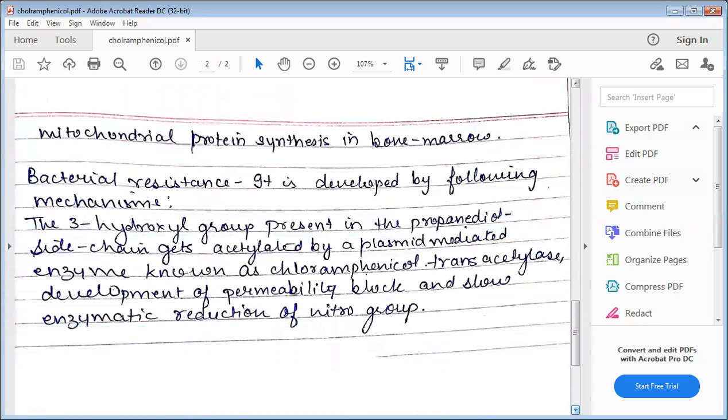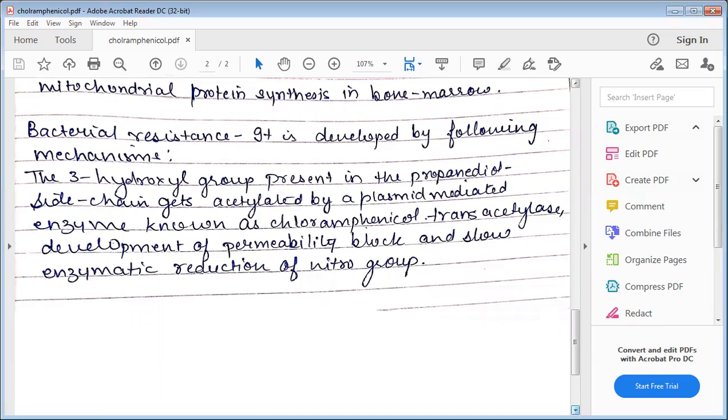Bacterial resistance to chloramphenicol can develop by plasmid-mediated chloramphenicol acetyltransferase enzyme. Since the human pathological microbial ribosomes develop, chloramphenicol is not acceptable. It is used in bone marrow and has reduction of white blood cells.